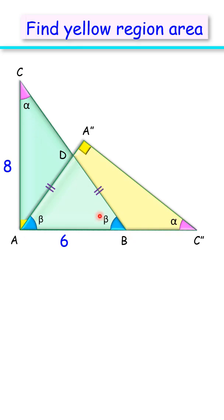Thus this angle here will be alpha degrees. Triangle ADC is an isosceles triangle, thus AD and DC are equal. Now, area of triangle ABC is nothing but half of base into height, or 24 centimeters square.